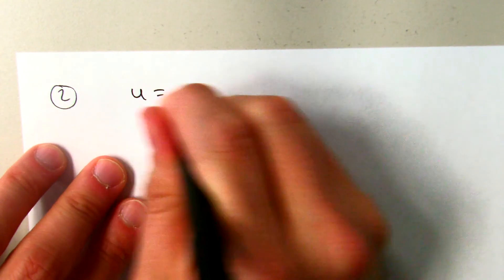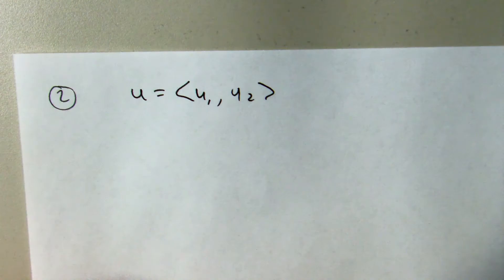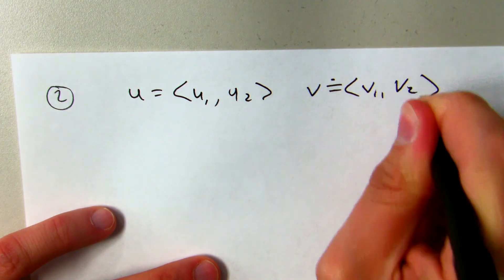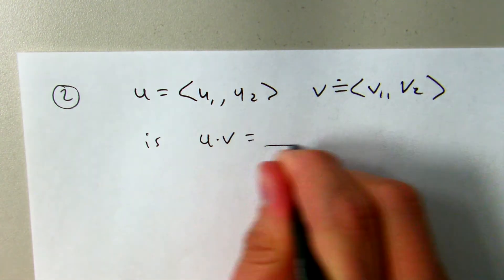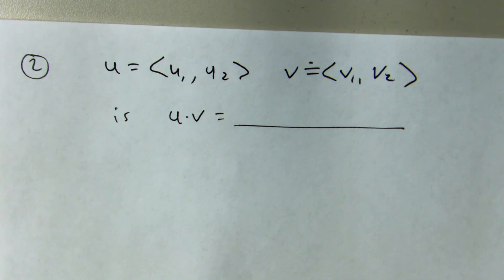All right, question two was in the vocab section, and it goes on to say the dot product of u, and it defines u as u1, u2, and v, and it defines v as v1, v2. So basically, they wanted you to take the dot product here without the numbers.